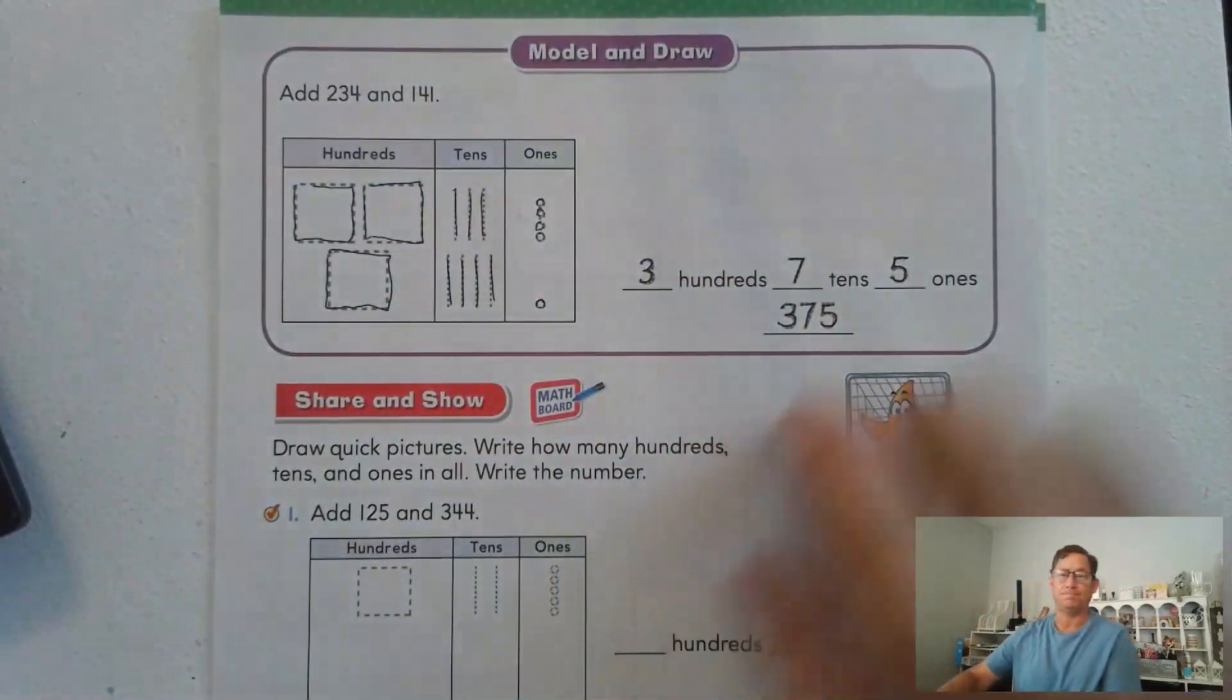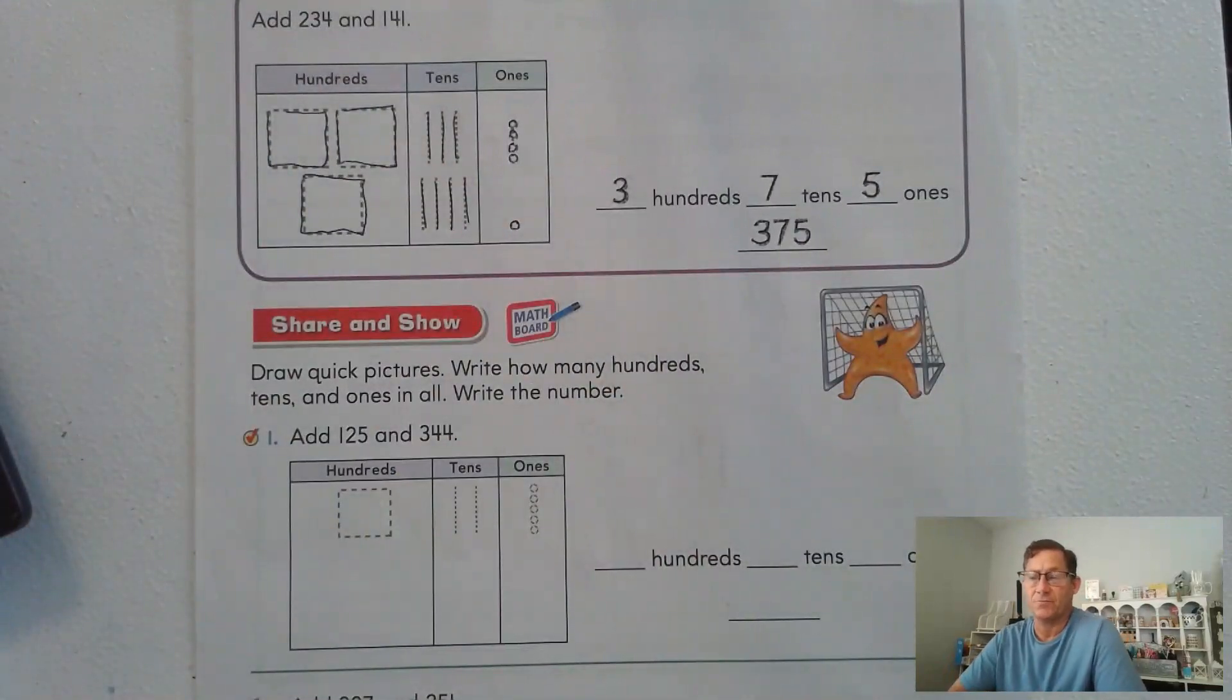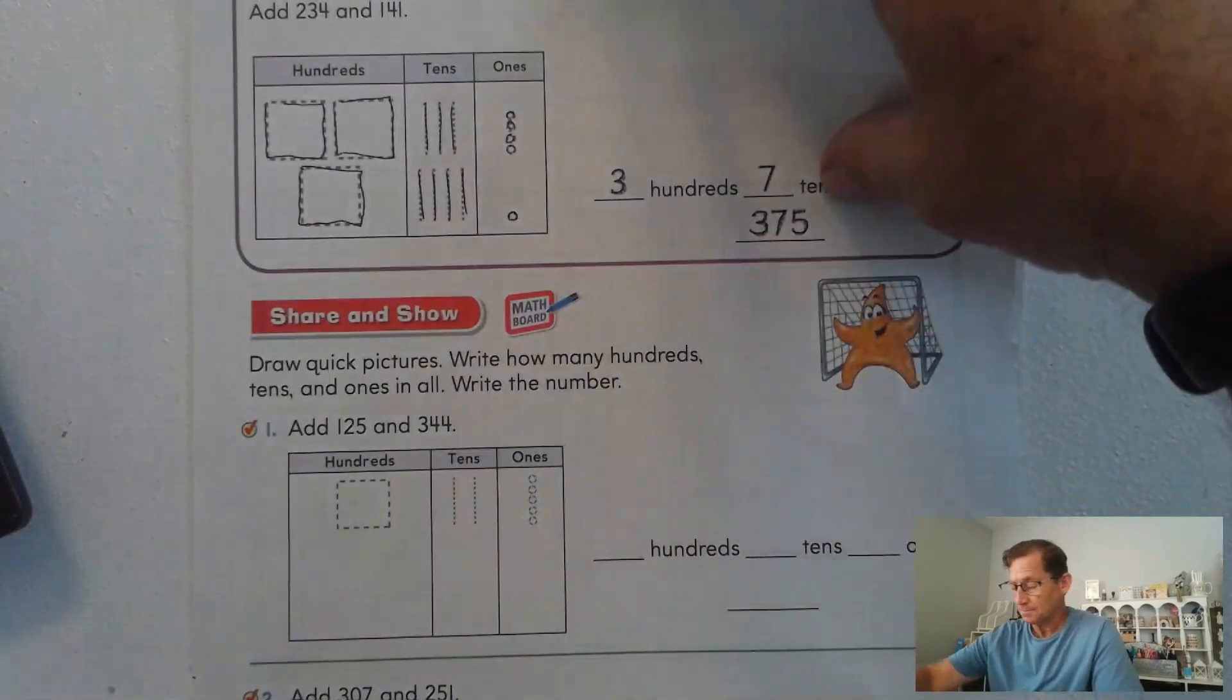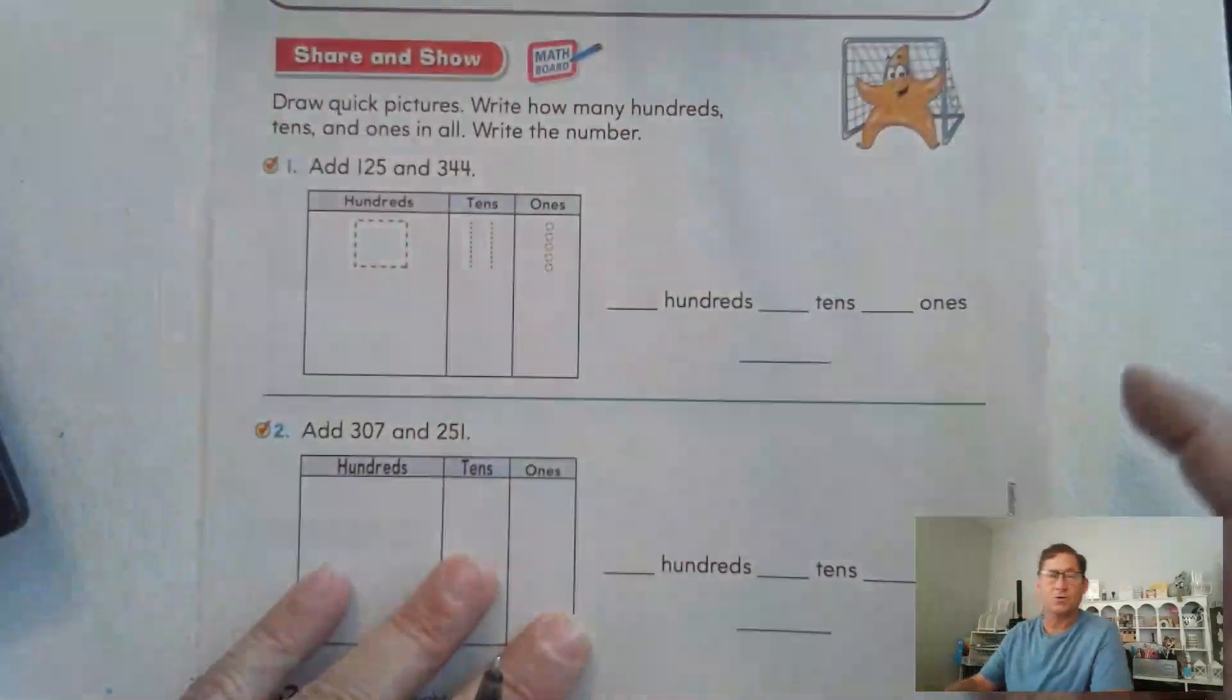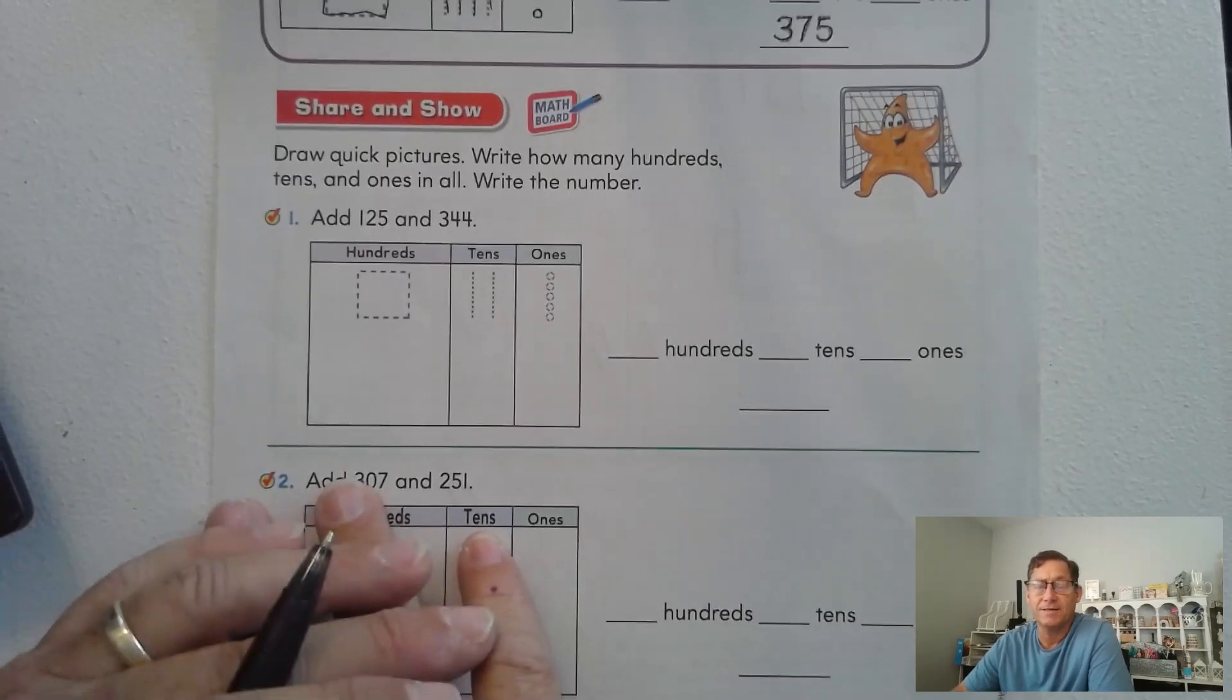So it's no different than tens and ones except we have an extra place value. We have a larger place value having hundreds. So we're going to draw quick pictures to solve these problems. Write how many hundreds, tens, and ones you have in all, and then write the number.